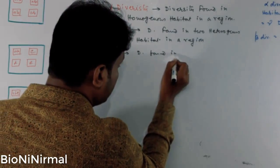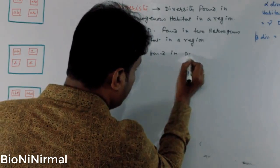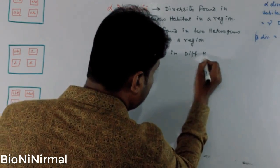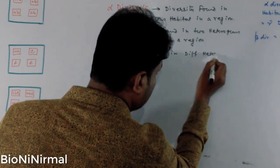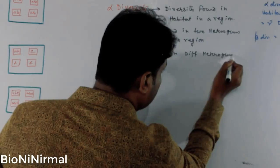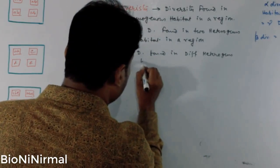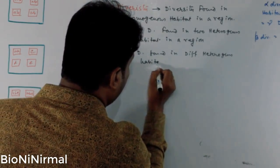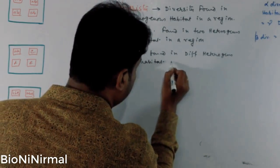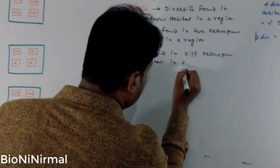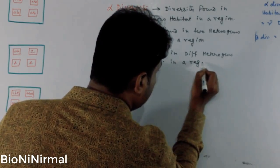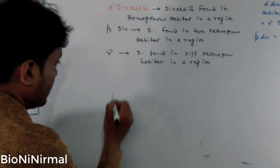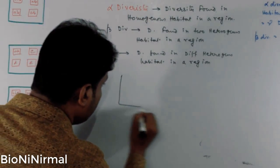Gamma diversity means the diversity found across all the different heterogeneous habitats in a region. This is called gamma diversity.